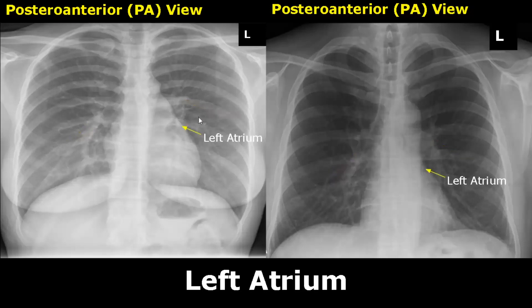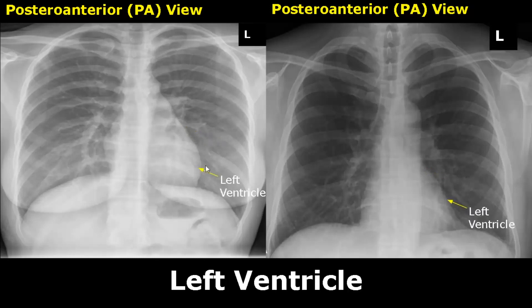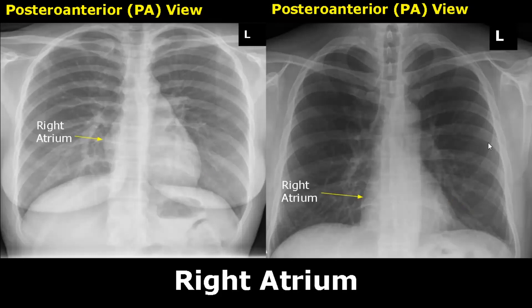Moving on to heart chambers, starting with the left atrium. This is the location of the left atrium; it forms a part of the left heart border. Below the left atrium will be the left ventricle. The left heart border is formed by the left atrial appendage and the left ventricle. This little bulging structure is the right atrium, which forms the right heart border. The right ventricle cannot be distinguished and it is not a part of the right heart border on x-ray.